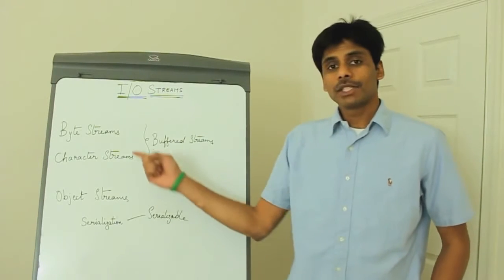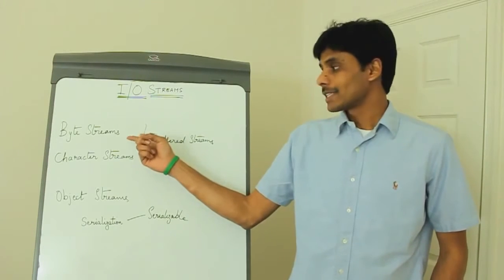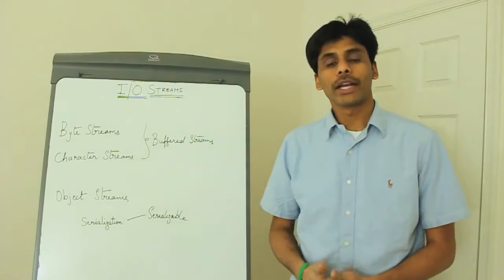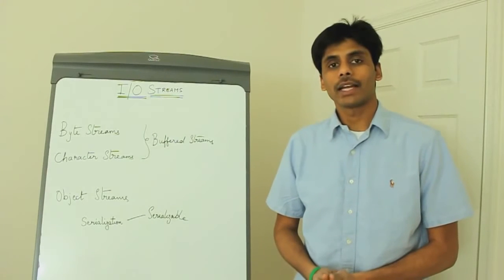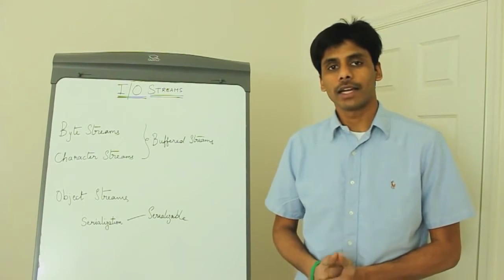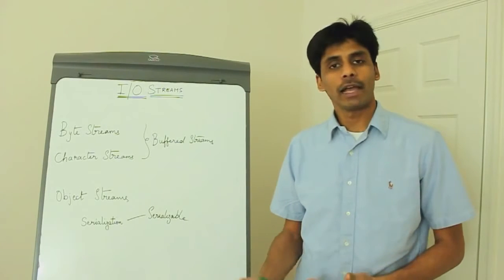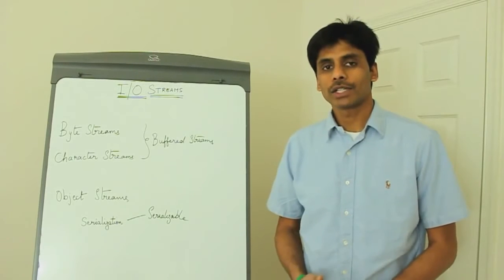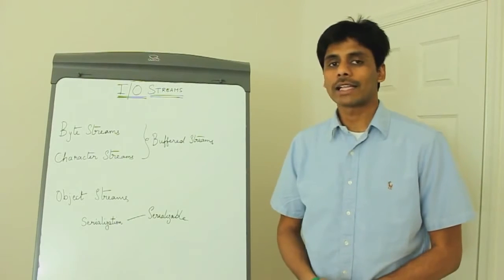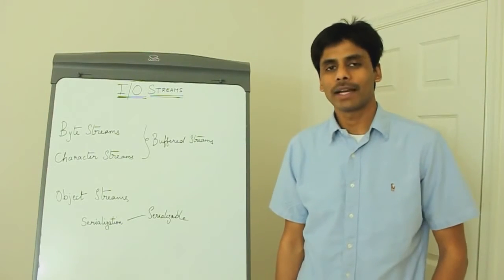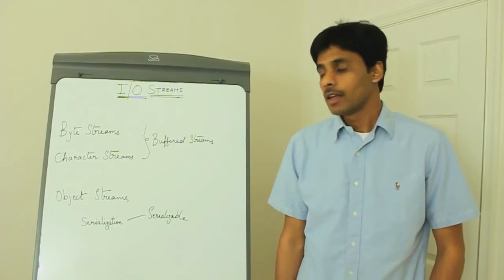The byte streams in Java — the classes in the byte streams — allow you to read and write one byte at a time. It could be a file or it could be a network location, but using the classes under byte streams, you will be able to read and write one byte at a time.